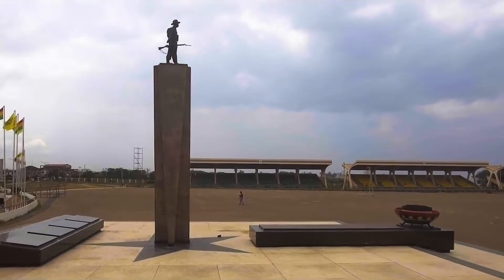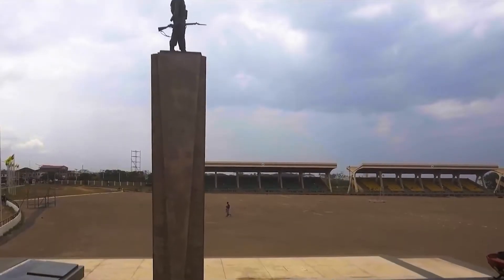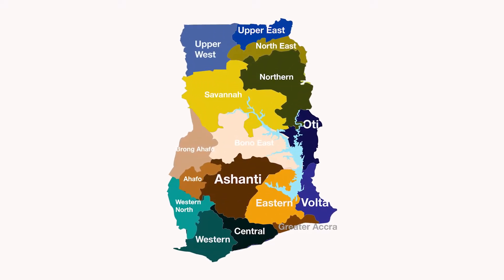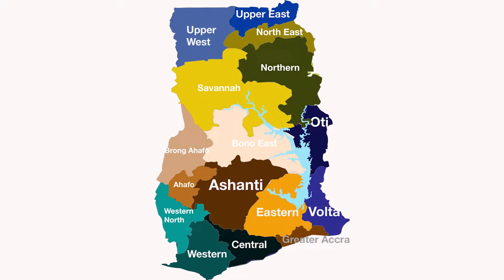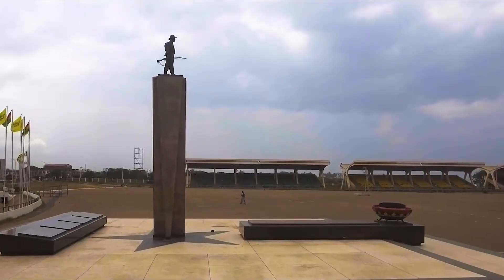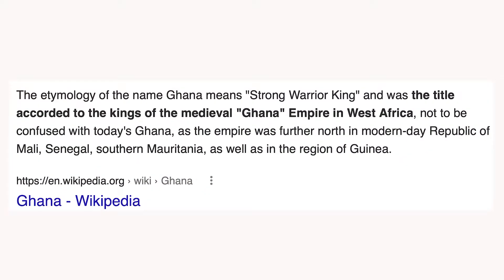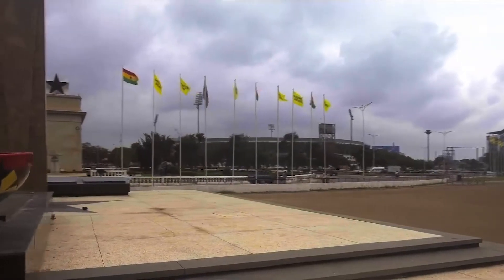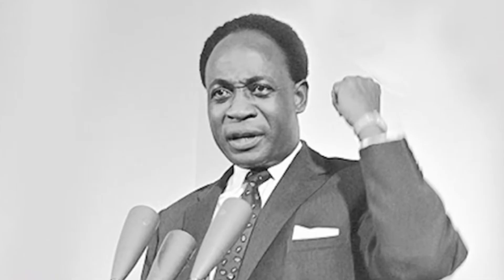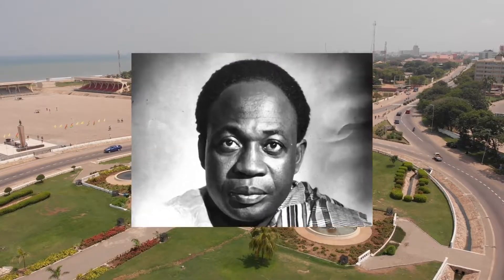This video takes you through a journey of the evolution of Ghana's regions. Here are the current 16 regions of Ghana — but how did Ghana arrive here? The Republic of Ghana is named after the medieval West African Ghana Empire. Ghana was formerly known as the Gold Coast. The name Ghana was adopted when Kwame Nkrumah declared the country's independence from Britain.